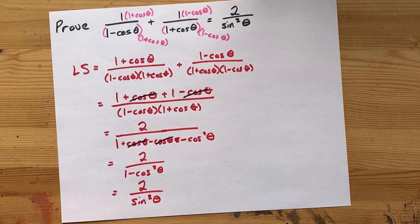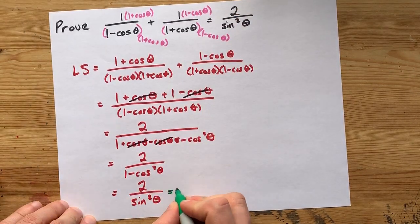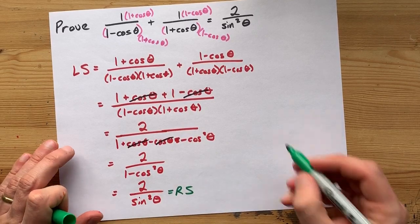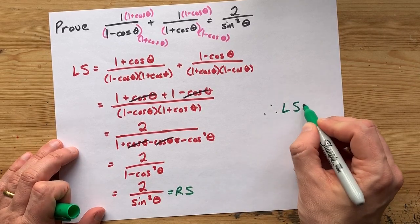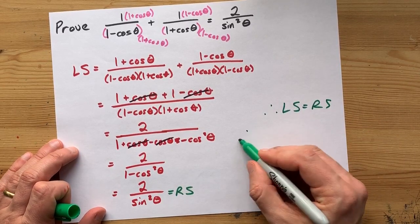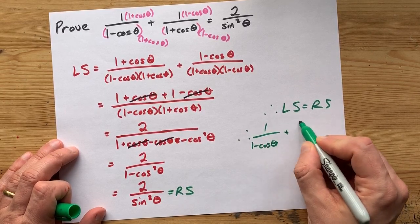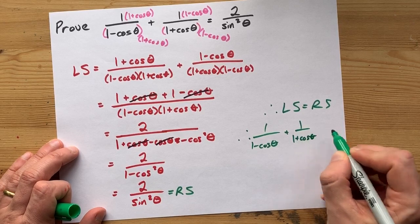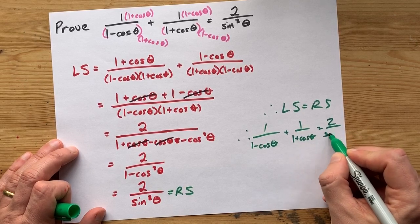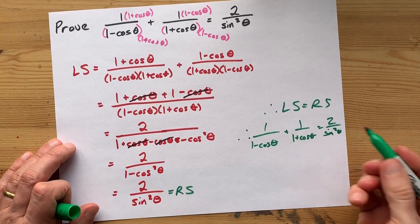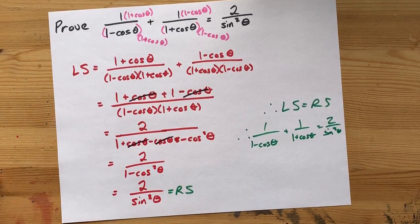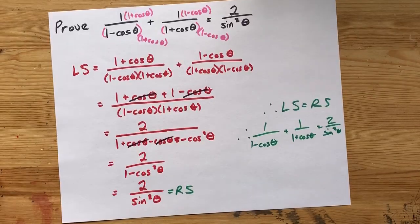Cool! So now, that equals that. My left side equals my right side. And we can celebrate by saying, therefore, left side equals right side. Therefore, 1 over 1 minus cos plus 1 over 1 plus cos equals 2 over sine squared. Love it. Not too bad. Less than 4 minutes. Peace.